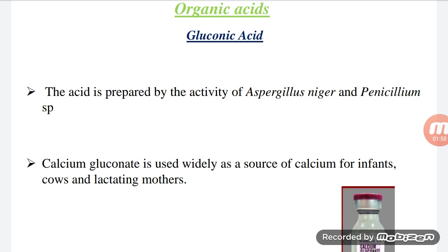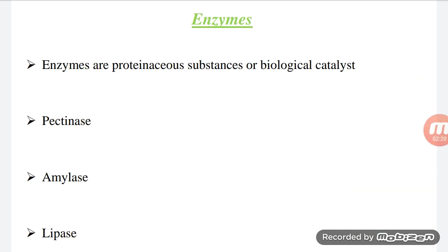The next acid is gluconic acid, which is prepared by the activity of Aspergillus niger and Penicillium species — both are fungi. This gluconic acid is combined with the nutrient calcium and supplied for infants, where it serves as a nutritional source.